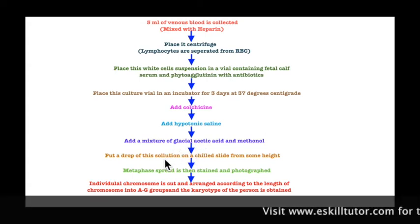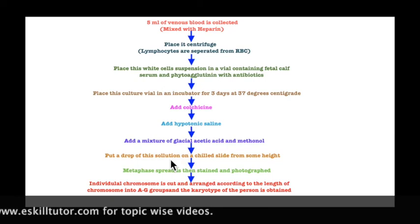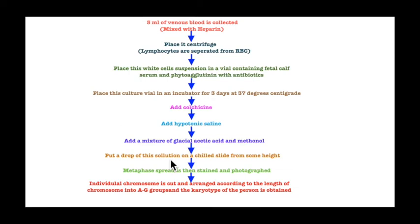After fixation, we take one drop of that solution and drop it from a certain height onto a chilled slide. Dropping from a certain height causes the cell wall to break and the chromosomes spread at the metaphase stage. This is called a metaphase spread.